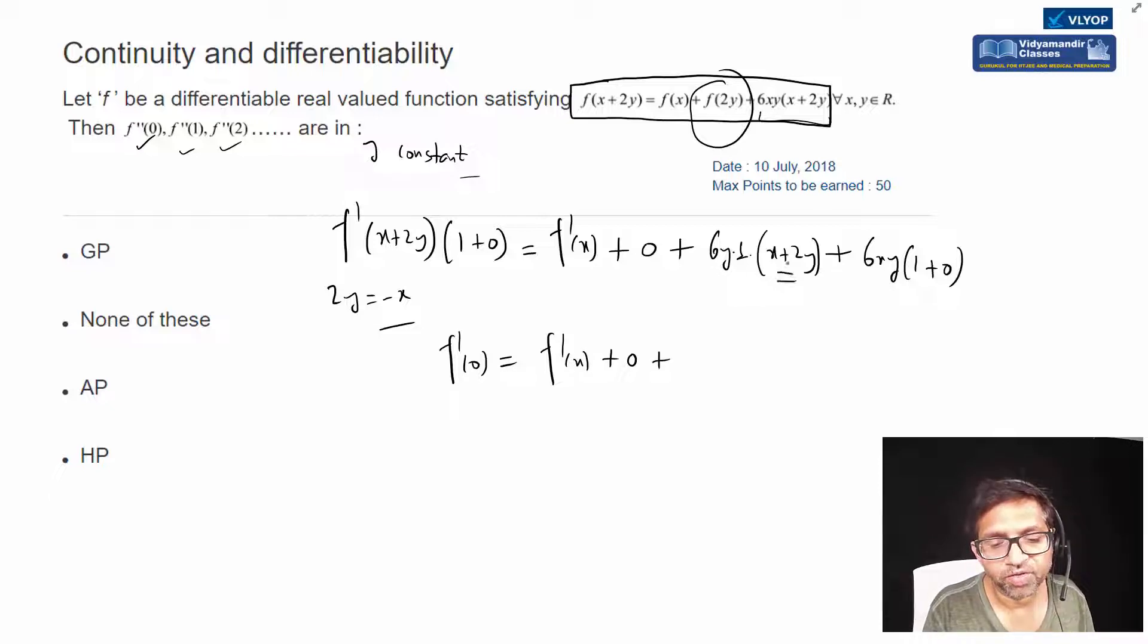We have taken this is also 0, this is also 0, this is 0 because I'm now replacing 2y with minus x, this is 0. Here we get 6x - I replaced xy with minus x by 2. So you have, look at my f'(x) is equal to f(0) minus 3x² plus 3x², this is what we get.